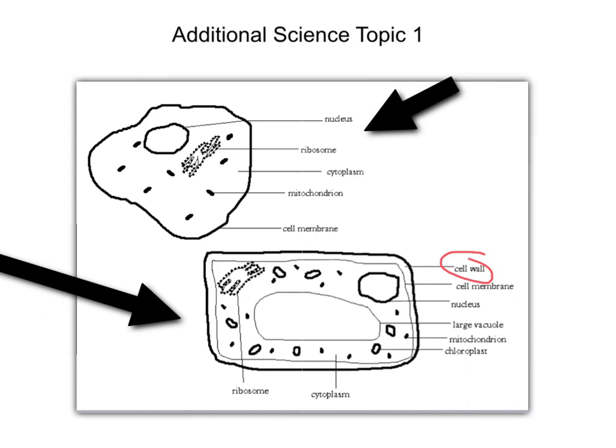Everything that's in the animal cell is also found in the plant cell, but there are a couple of things in the plant cell that are extra, that you don't find in the animal cell. And these are the ones that you've got to be very clear about. First of all, we've got the cell wall, is extra in the plant cell. We've also got a large vacuole, and we've also got chloroplast.